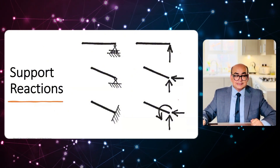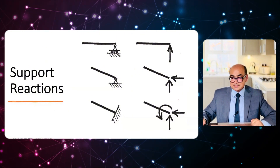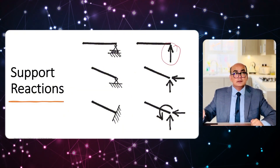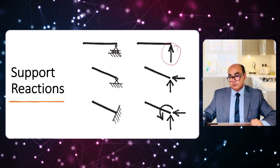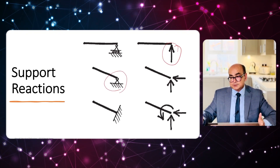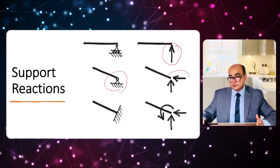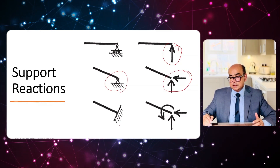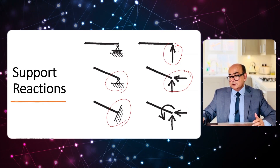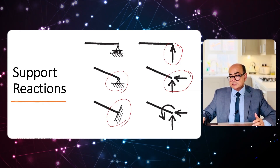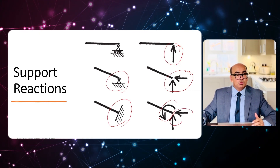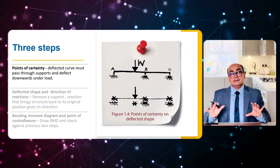Another key thing to remember is support conditions. For a roller support we have one reaction — vertical. For a pin or simple support we have two reactions — horizontal and vertical. For a fully fixed support we have horizontal, vertical, and a resisting moment as well.